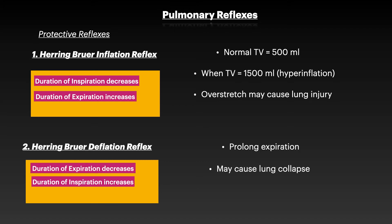Pulmonary reflexes are the second component of neural regulation. There are four pulmonary reflexes overall. The first two are protective reflexes, not primarily regulatory. The first is the Hering-Breuer inflation reflex. When the lung reaches a tidal volume of 1500 ml — three times the normal tidal volume of 500 ml — there is hyperinflation and overstretch, sensed by stretch receptors. To protect against lung injury, this reflex decreases the duration of inspiration and increases the duration of expiration.